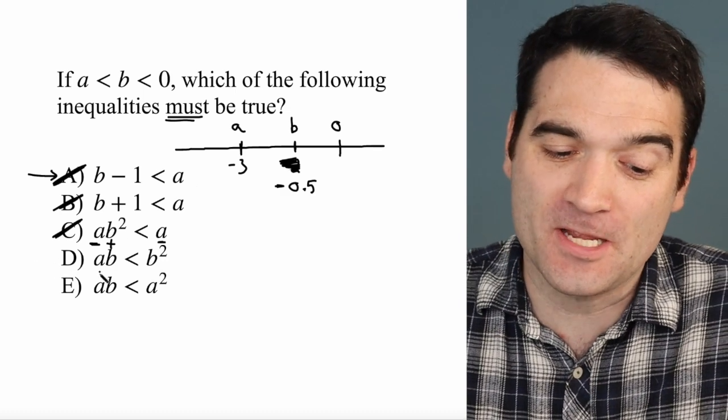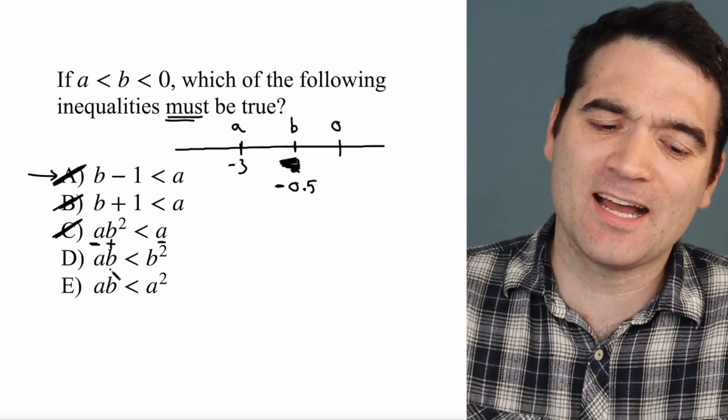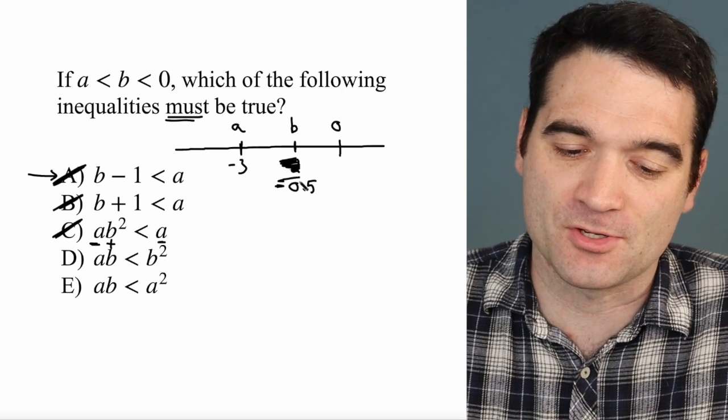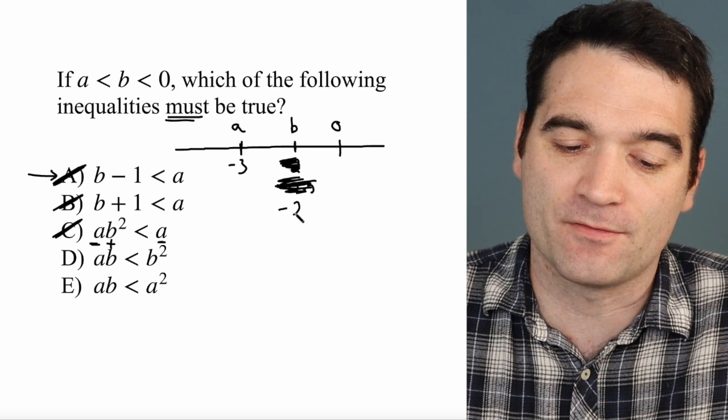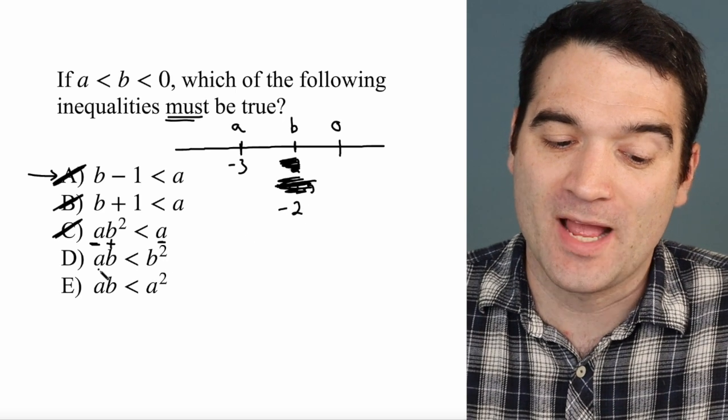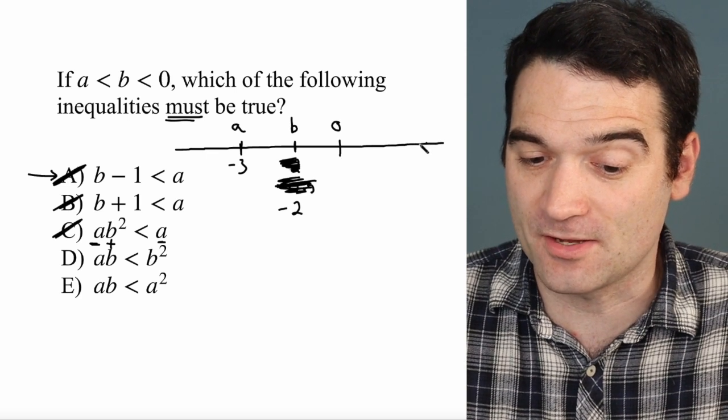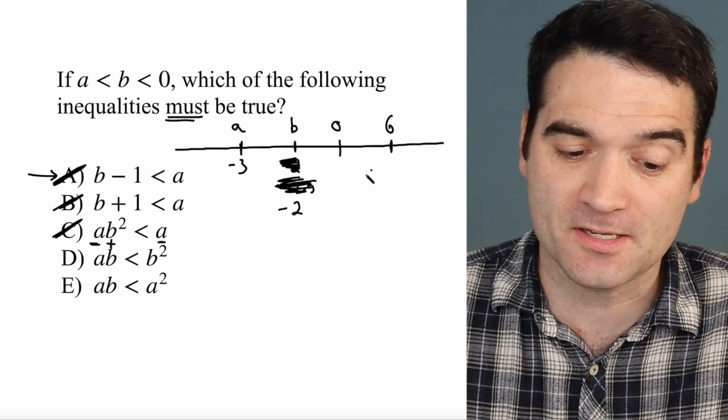Let's take a look at answer option D. A times B is less than B squared. Well, let's go back to the easy numbers I was using. We'll say negative 3 and negative 2 right there. So A times B is positive 6. Okay, well, positive 6 goes up here. There's positive 6.